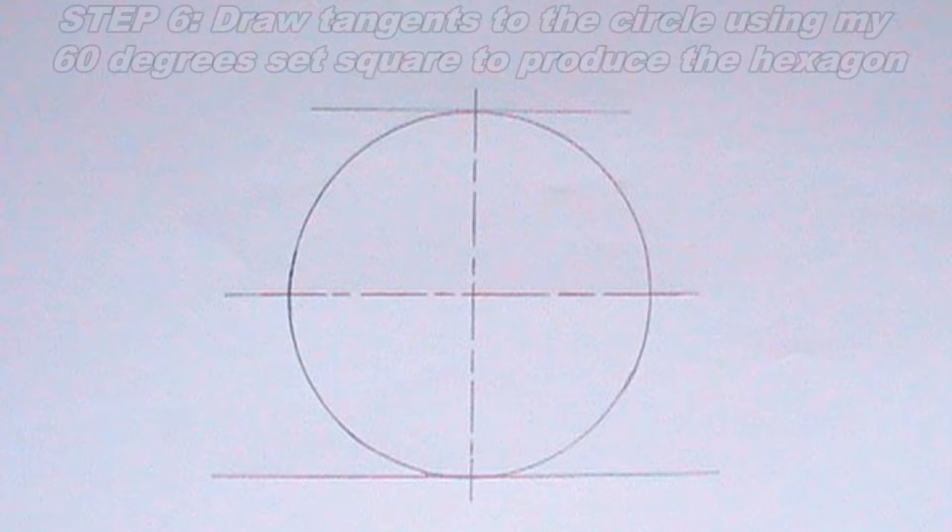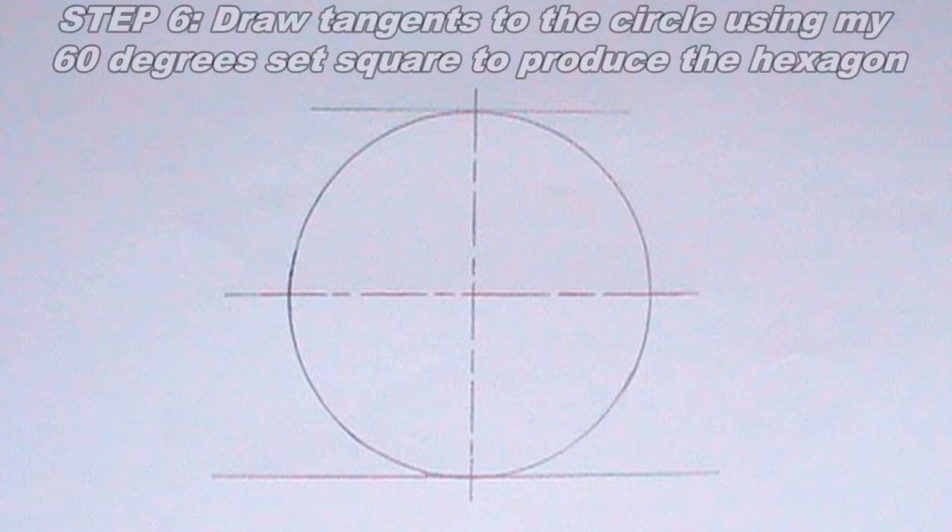The next thing I will do is to draw tangents to the circle using my 60 degrees set square to produce the hexagon. This step can be done this way.